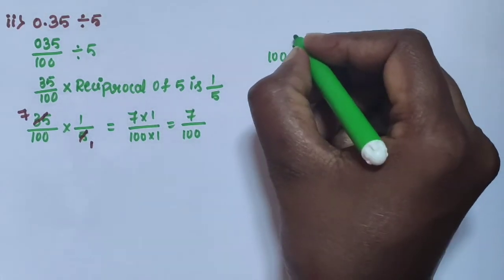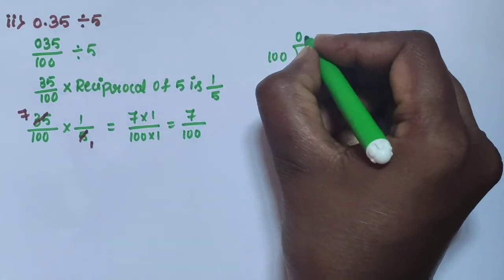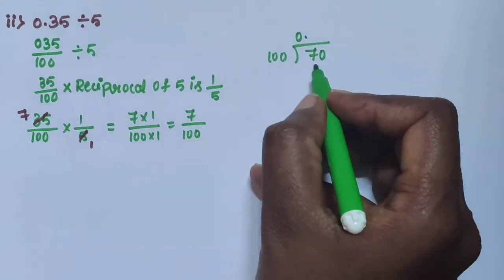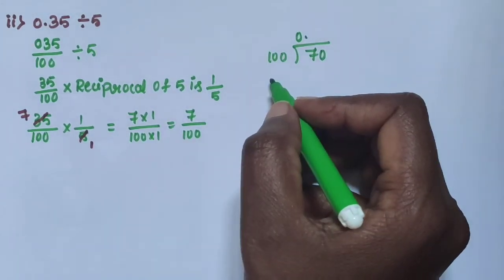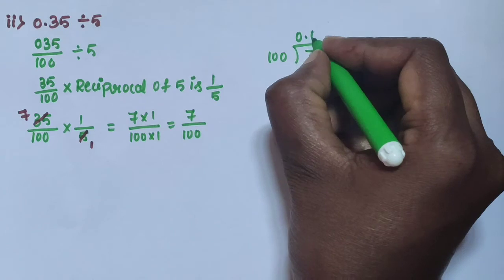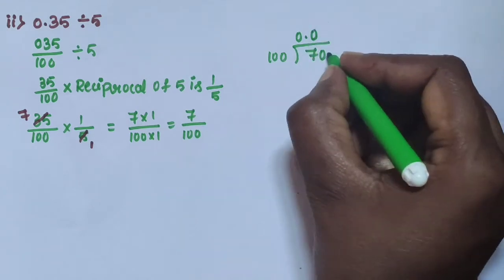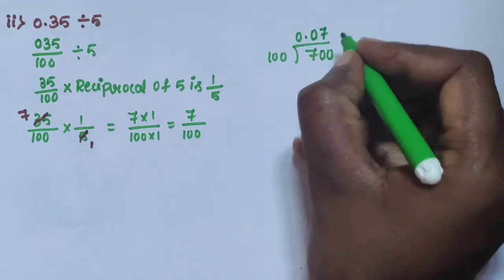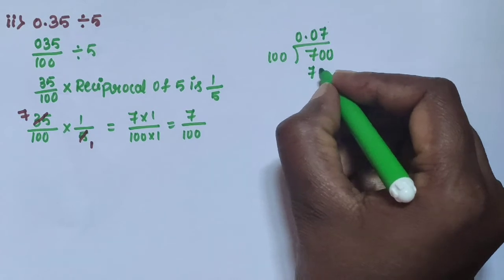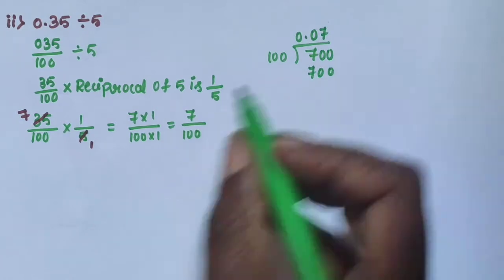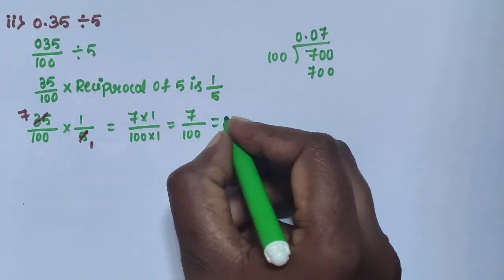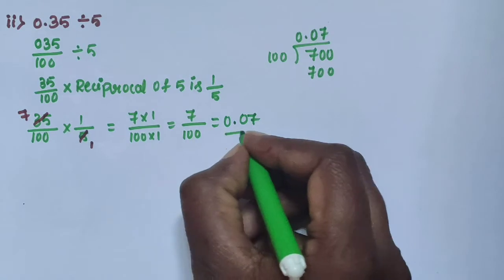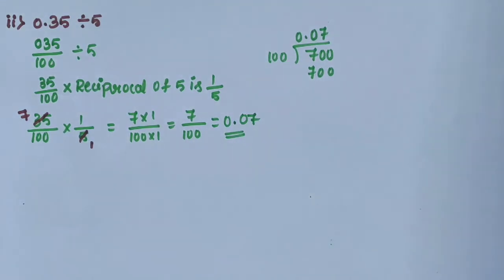7 is smaller than 100, so apply 0.0. 70 is also smaller than 100, so add a zero. 10 sevens are 700. The answer is 0.07.